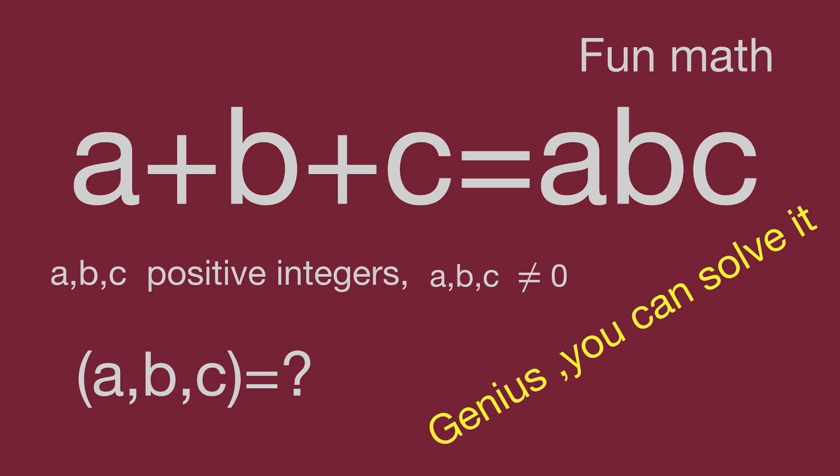A, B, C are positive integers. A, B, C not equal to zero. Then A plus B plus C equal to A times B times C. Find the value for A, B, C.